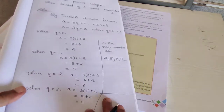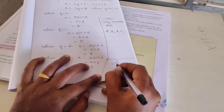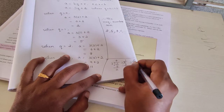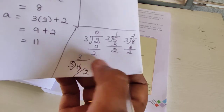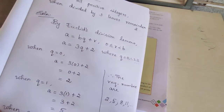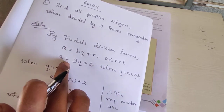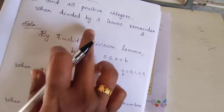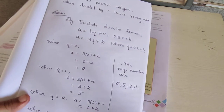We can check whether our answer is correct. When 2 is divided by 3, the remainder is 2. When 5 is divided by 3, 1 three is 3, the remainder is 2. When 8 is divided by 3, 2 threes are 6, the remainder is 2. When 11 is divided by 3, 3 threes are 9, the remainder is 2. In all these cases, when we divide by 3, we are getting remainder 2 — that is what was asked. By Euclid's division lemma, write the formula, then the format: a equals 3q plus 2, where the divisor is 3 and the remainder is 2.